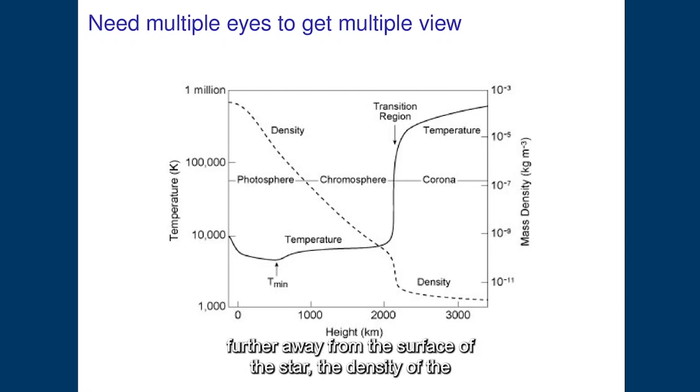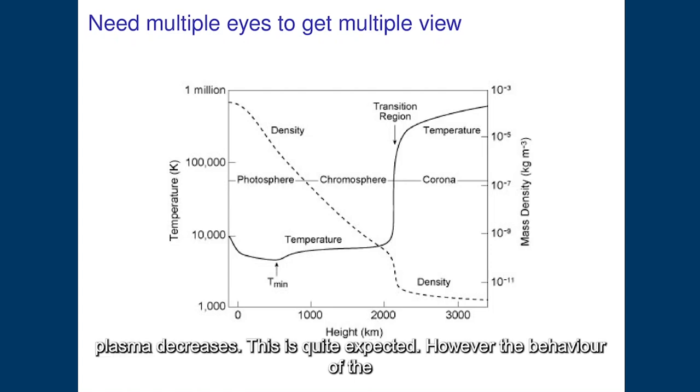So in terms of density, there is nothing too surprising. As you go further away from the surface of the star, the density of the plasma decreases. This is quite expected.